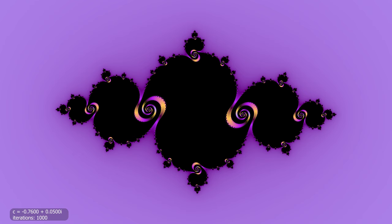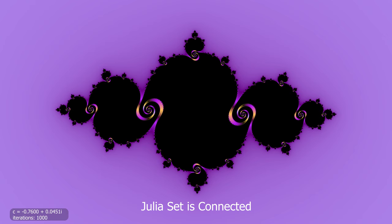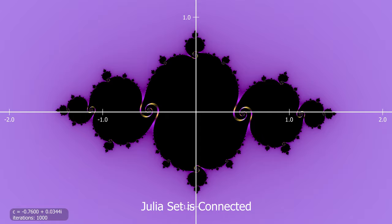Additionally there are two types of Julia sets. The first type is where the whole filled Julia set is connected. In this case the origin or zero is also part of the filled Julia set and is colored black.